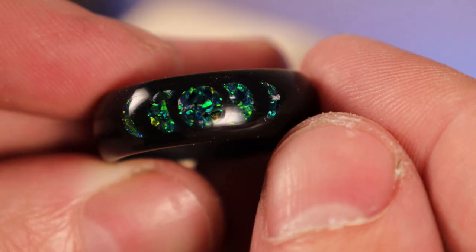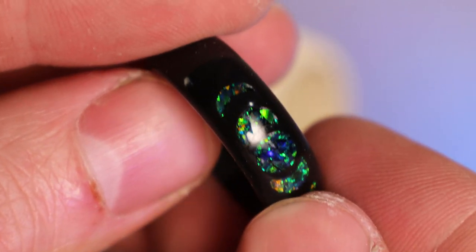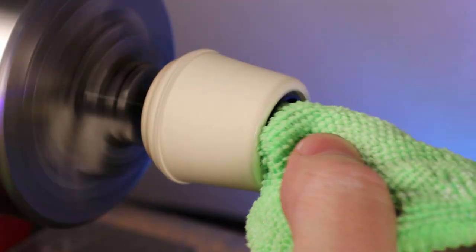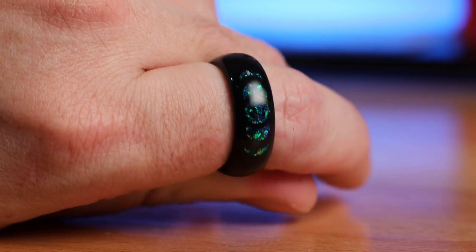As for the inlay itself, it looks pretty good, but there are a couple places I need to touch up by adding some more CA glue, but I'll do this later. But for now, I'm going to clean up the inside of the ring using the same method I did on the outside, and everything should have a nice high polish when I'm done.